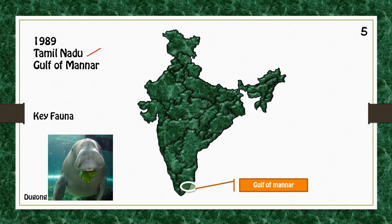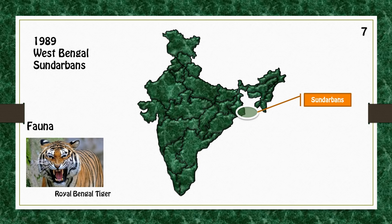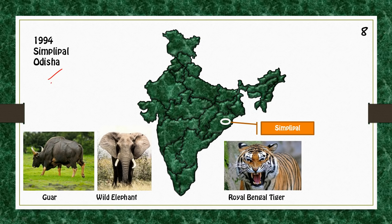In Tamil Nadu we have Gulf of Mannar biosphere reserve; key fauna include Dugong, also called Sea Cow. In Assam we have Manas; key fauna include Golden Langur and Red Panda. In West Bengal we have Sundarbans; key fauna include Royal Bengal Tiger. In Odisha we have Simlipal biosphere reserve; key fauna include Gaur, Wild Elephants, and Royal Bengal Tiger.